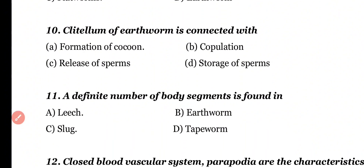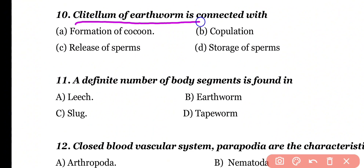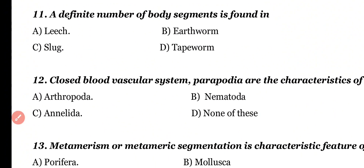Question number 10. Clitelium of earthworm is connected with: formation of cocoon, copulation, release of sperm, or storage of sperm. Correct answer is option A. Clitelium of earthworm is mainly responsible for the formation of cocoon.